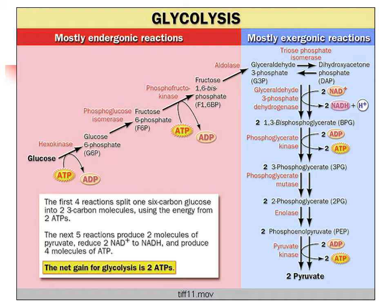The first four reactions split one 6-carbon glucose into two 3-carbon molecules using the energy from 2 ATPs. The next five reactions produce 2 molecules of pyruvate, reduce 2 NAD+ to 2 NADH, and produce 4 molecules of ATP. The net gain of glycolysis is 2 ATPs.